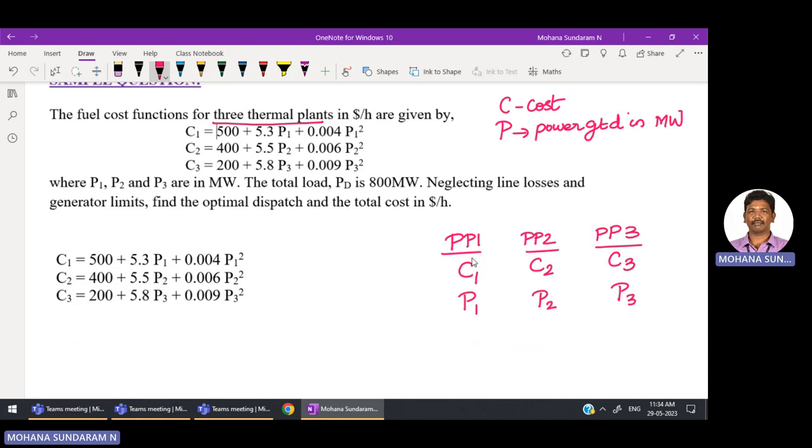The logic here is we know they have given us the cost functions. C1 is equal to an equation in terms of P1, C2 is an equation in terms of P2, C3 is an equation in terms of P3. That means the cost is a function of real power. The total load demand PD is 800 megawatts.